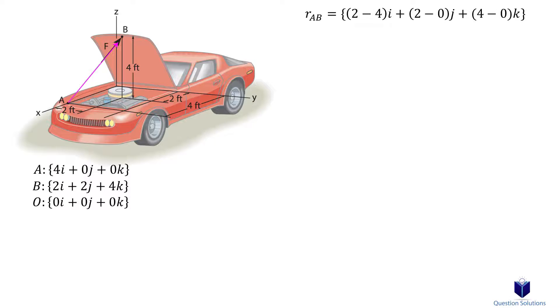So our position vector AB becomes negative 2i plus 2j plus 4k. Now we need to figure out the magnitude of this position vector.